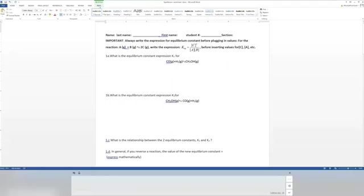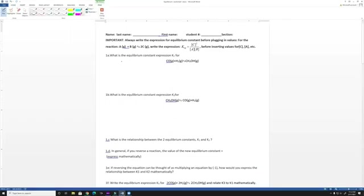For the first one, what is the equilibrium constant for K1? We have this reaction: gaseous carbon monoxide plus hydrogen gas equals methanol gas. Basically K1 is going to equal the products over the reactants. Keep in mind you have to balance this too, because it's not balanced as it is.